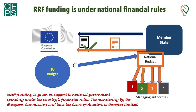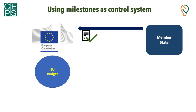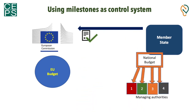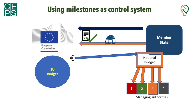In a nutshell, the RRF funding is given as support to national government spending under the country's financial rules, and the monitoring by the European Commission and the Court of Auditors is therefore limited. As a response to concerns about how the funding is being used given this lack of direct control, the European Commission introduced the concept of milestones to check the use of the funding. This means that at regular intervals — every six months — national authorities will report on the achievement of milestones, and if these pre-agreed milestones are achieved, the European Commission will release the first tranche of funding.